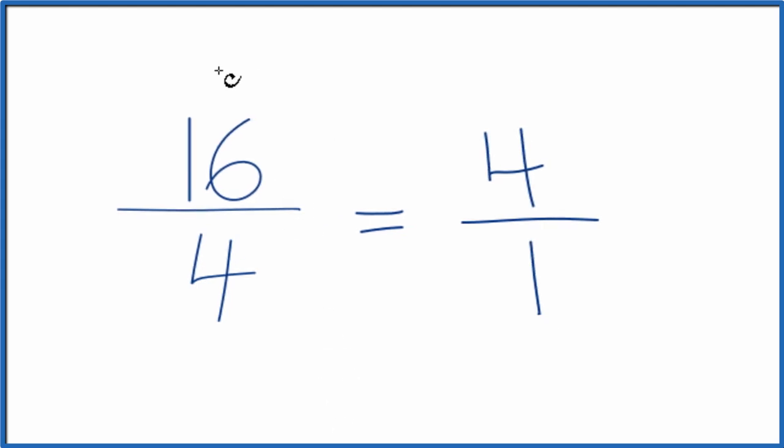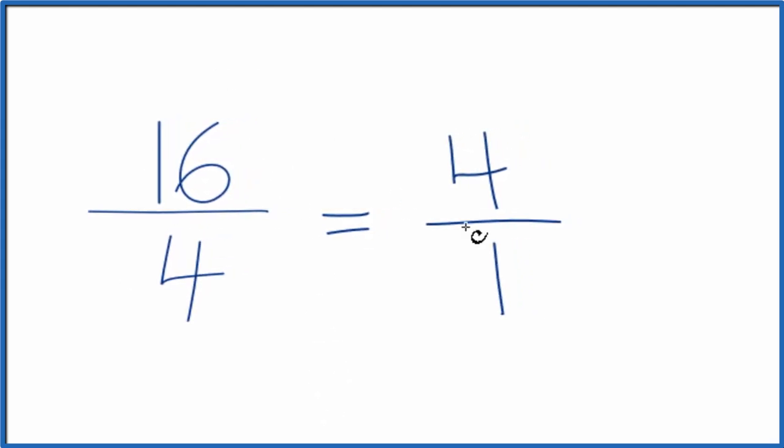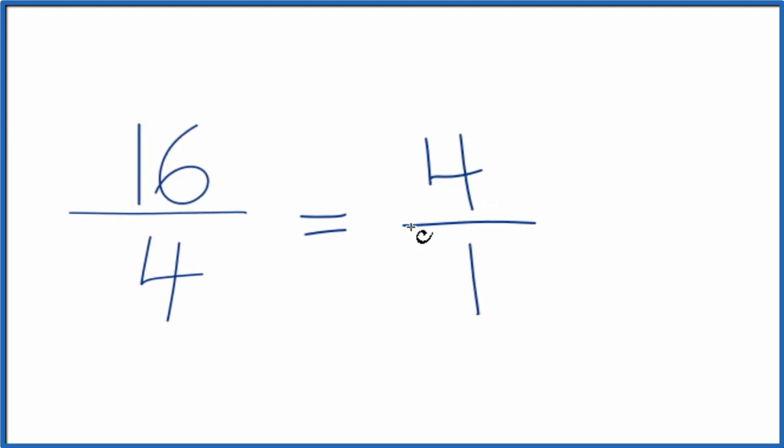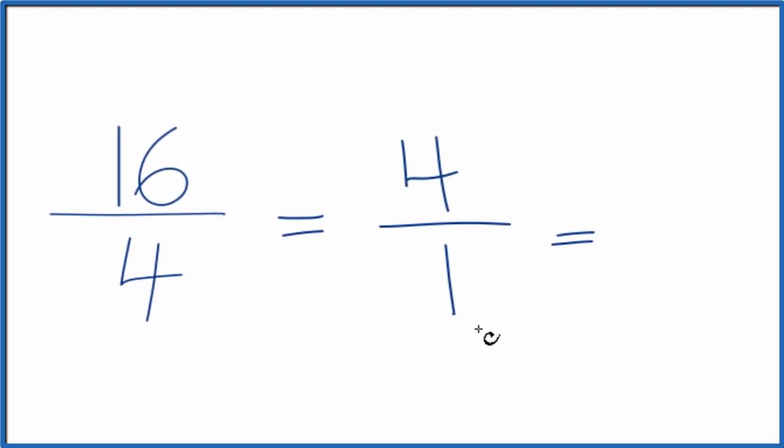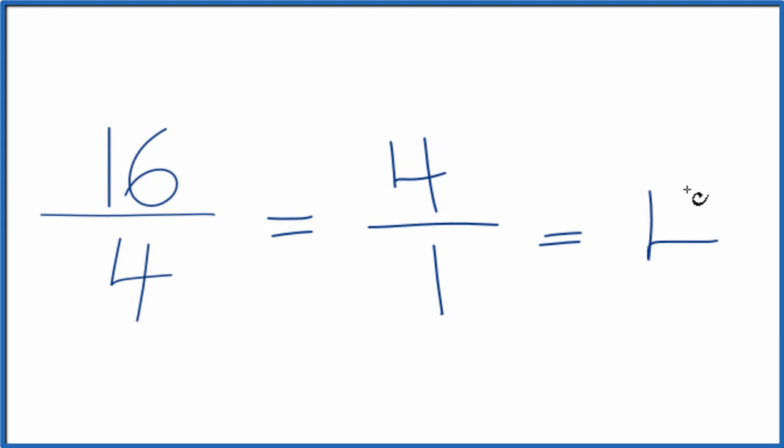And when we have this fraction here, 16 fourths, we can simplify it to 4 over 1. 4 over 1, that's just 4 divided by 1. And when you divide 4 by 1, you get the whole number 4.